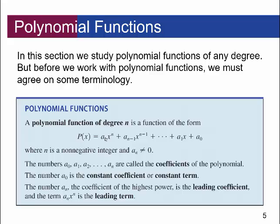P of x is equal to a sub n times x to the n, plus a sub n minus 1 times x to the n minus 1. If n was 5, this next term is now degree 4, and you keep going down until you get to a sub 1 times x, plus a sub 0 with no variable component. Here n is a non-negative integer. These a's — a sub 0, a sub 1, all the way to a sub n — are called the coefficients of the polynomial.